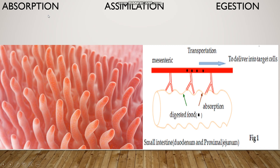After digestion of the food materials, the digested materials are absorbed by the blood. Absorption takes place in the small intestine. The inner walls of the small intestine have finger-like projections called villi. Villi increase the surface area for the absorption of digested food materials by the blood.